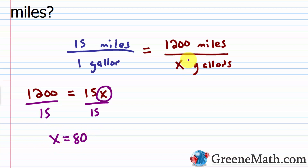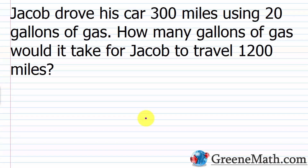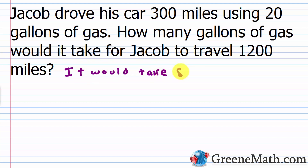So x represents the number of gallons it will take for Jacob to travel 1200 miles. It would take 80 gallons of gasoline.